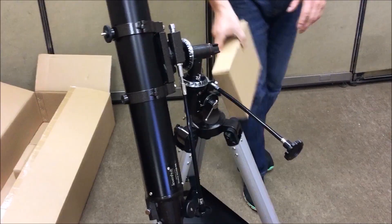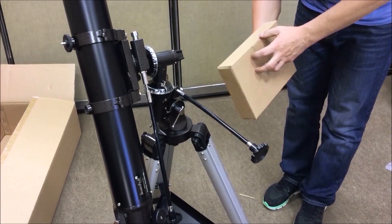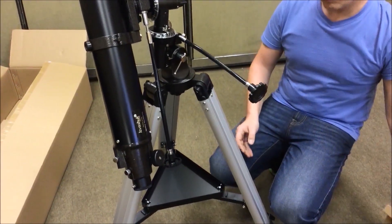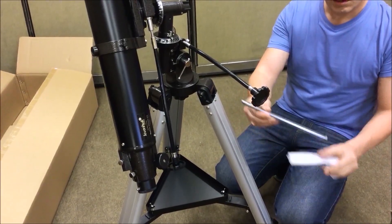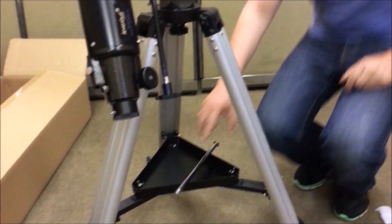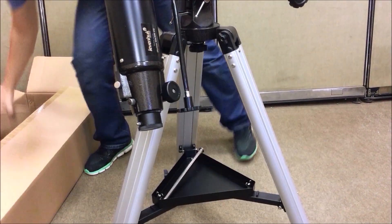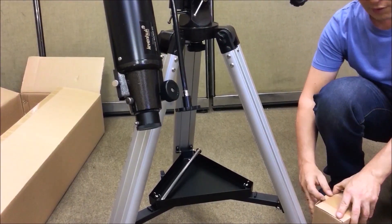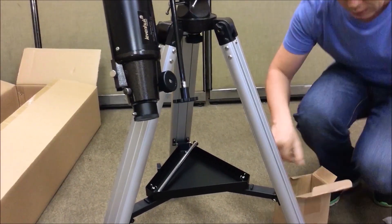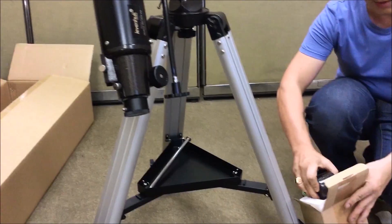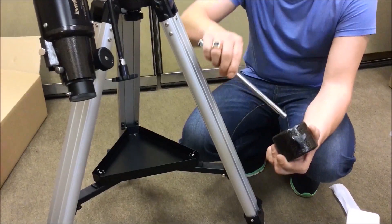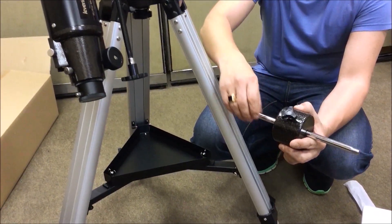Now let's get the box with accessories and take the counterweight rod out. Here it is. Let's put it on the accessory tray for now. Let's take the counterweight out. Now we slide it on the rod, put it approximately in the middle, and lock it with a screw.